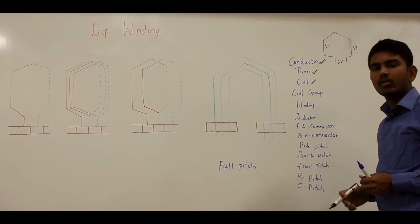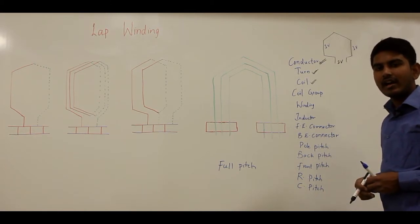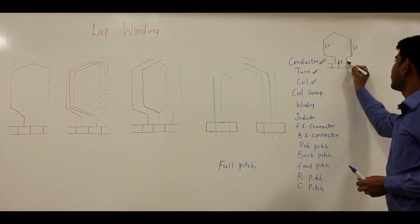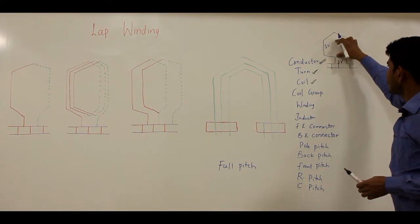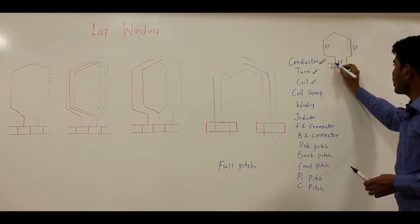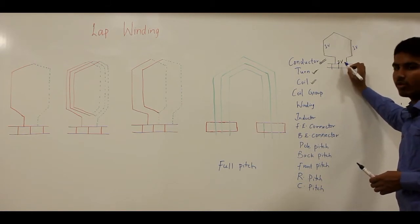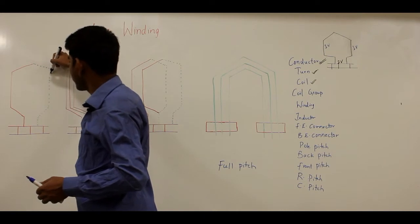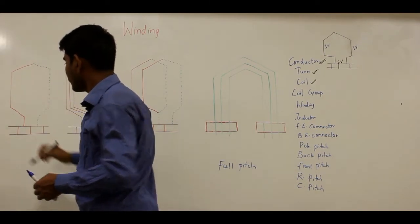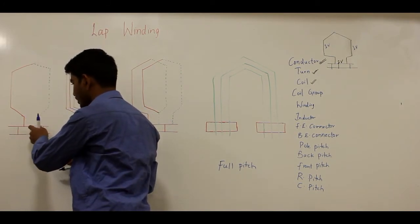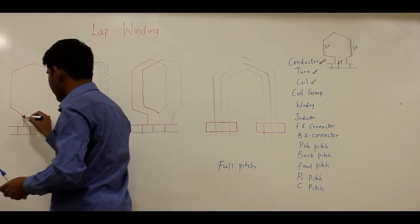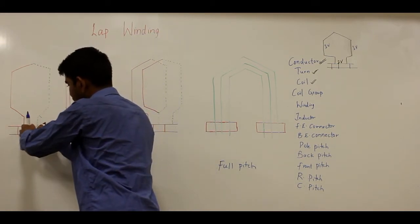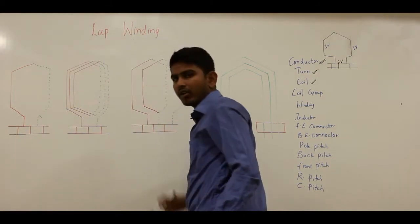A coil can be defined as a single turn or one or more turns connected in series, and their end connections will be connected to the commutator segments — specifically, to adjacent commutator segments in lap winding. The dotted portion represents the bottom part of the conductor and the solid line represents the top part. The end connections are the front end connector and the back end connector, which I will discuss later.